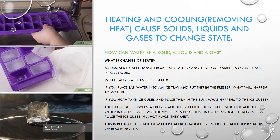If you take tap water and put it in an ice tray, then put it in a freezer, what would happen to the water? It would be frozen into ice. Now, if you take that ice and put it outside in the sun, you can see it's melting. The difference between the freezer and the sun is that outside is hot and the freezer is very cold. If it's cold enough, it will freeze into ice cubes. But if it's hot outside, it will melt.